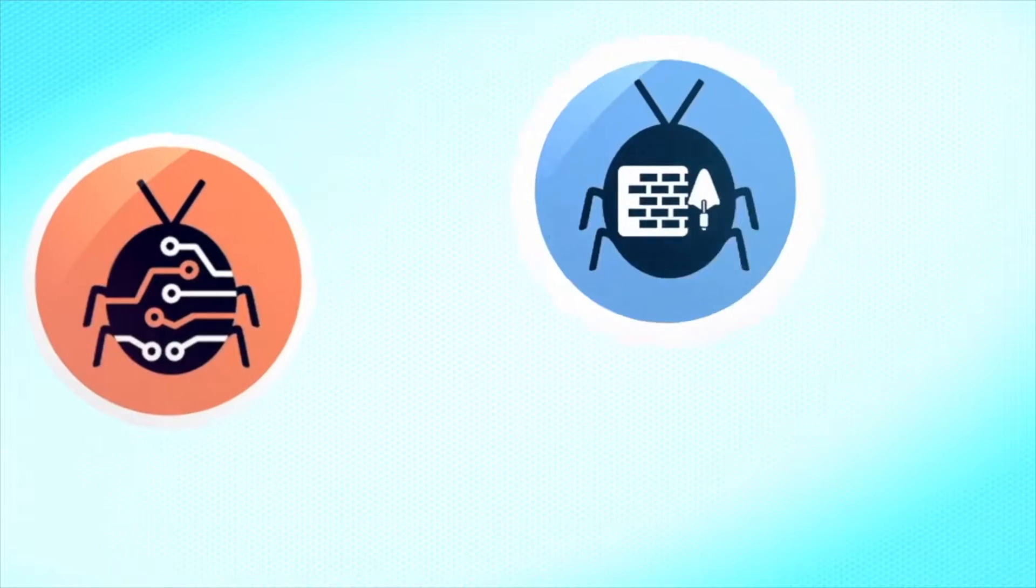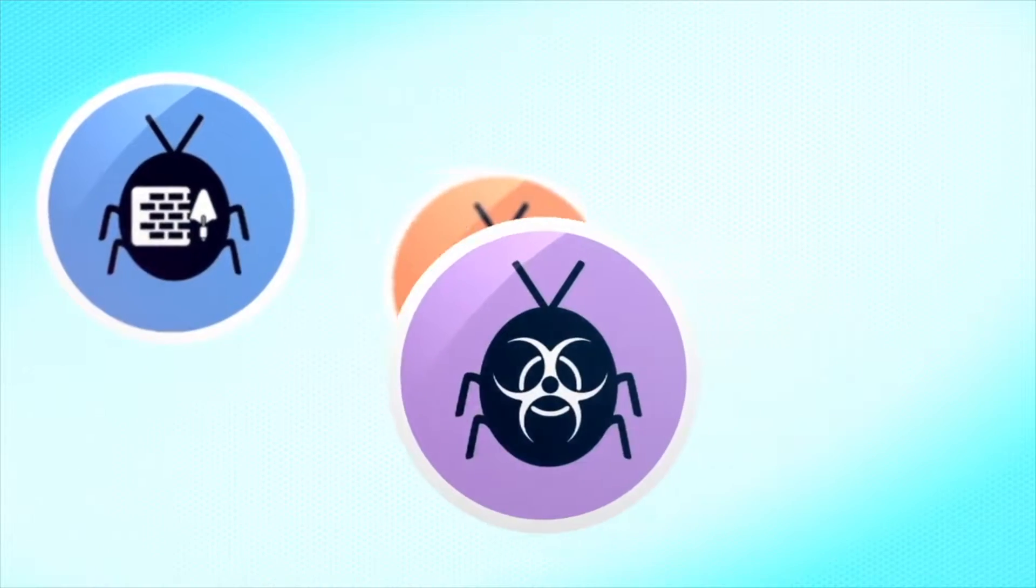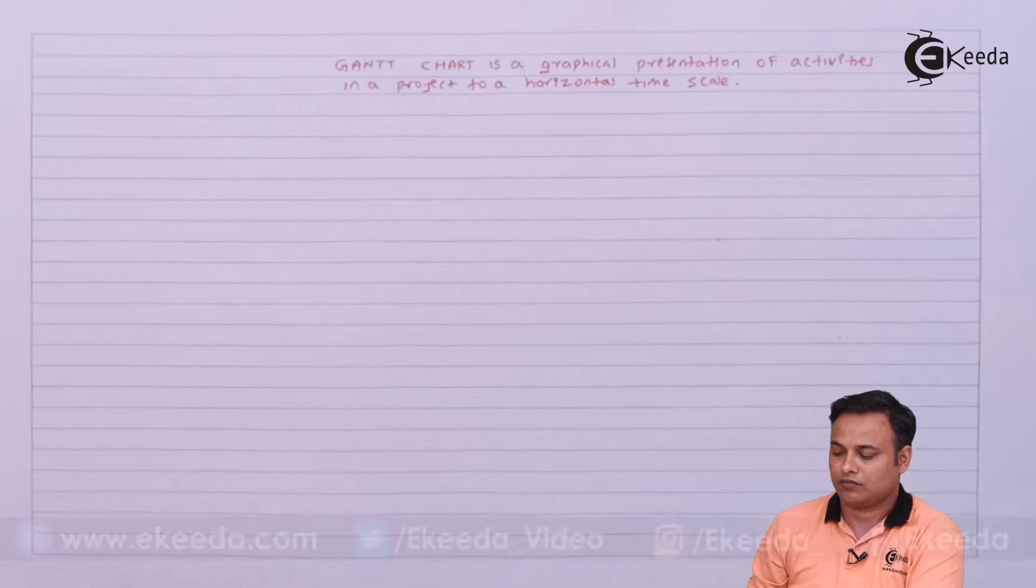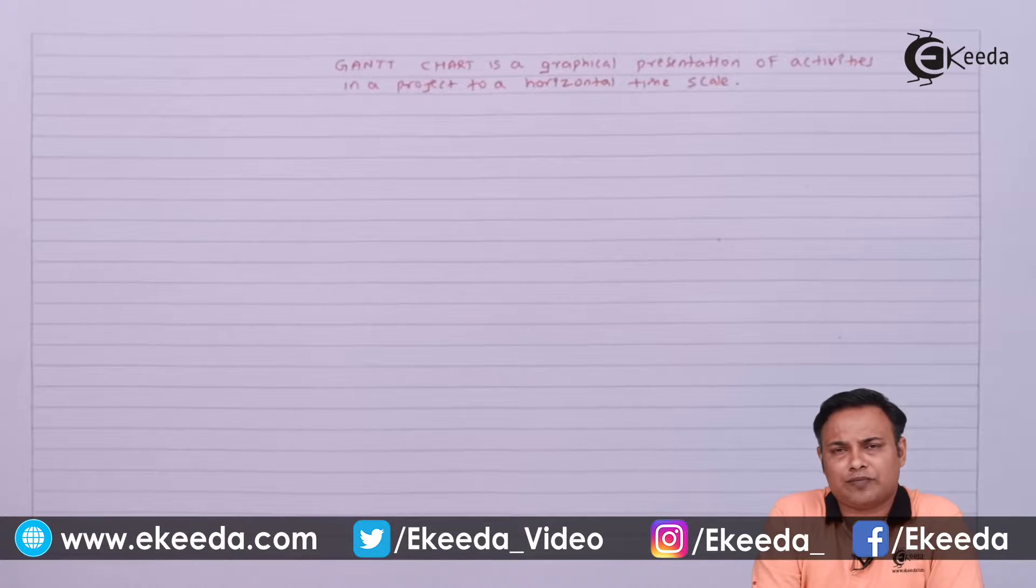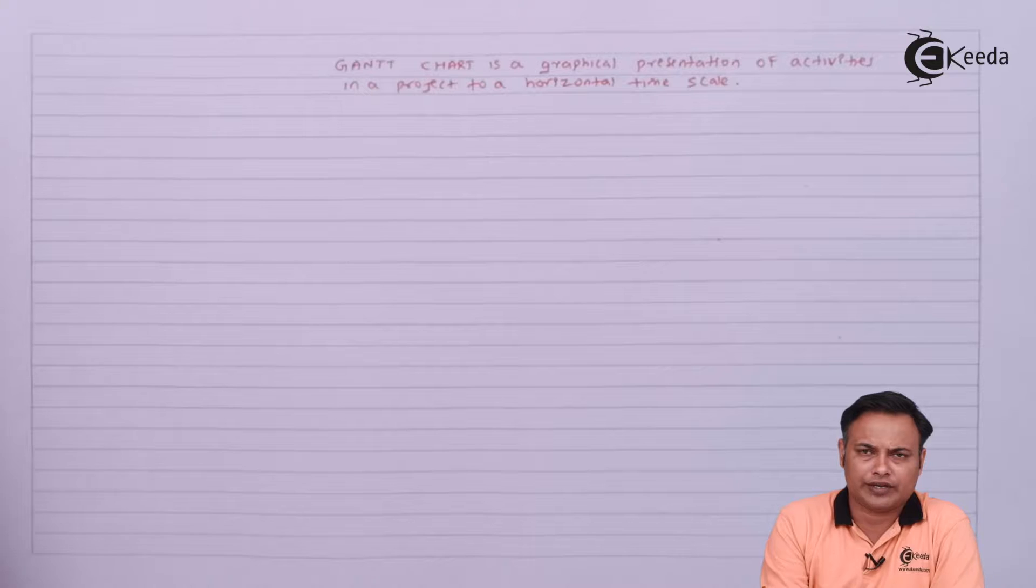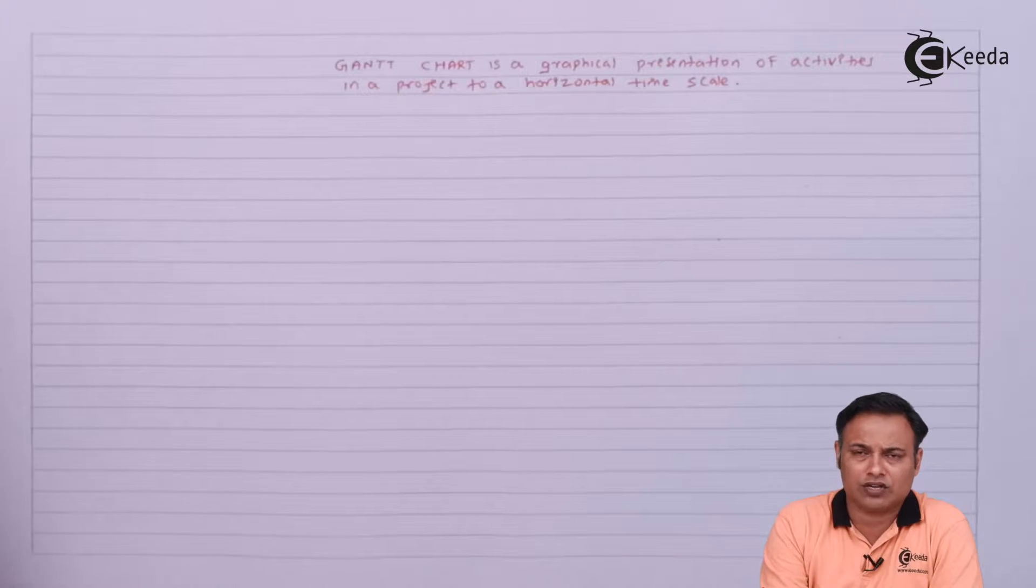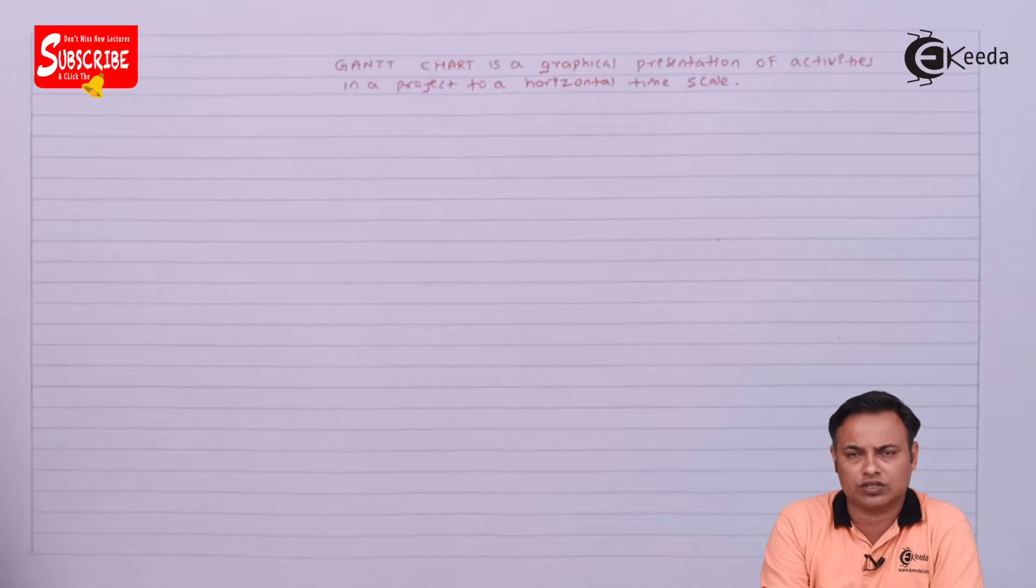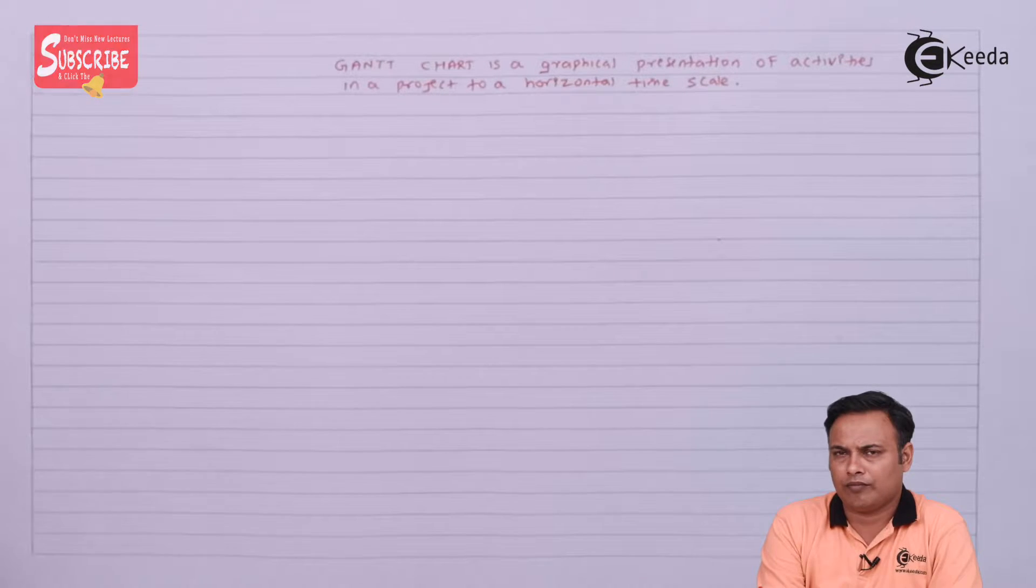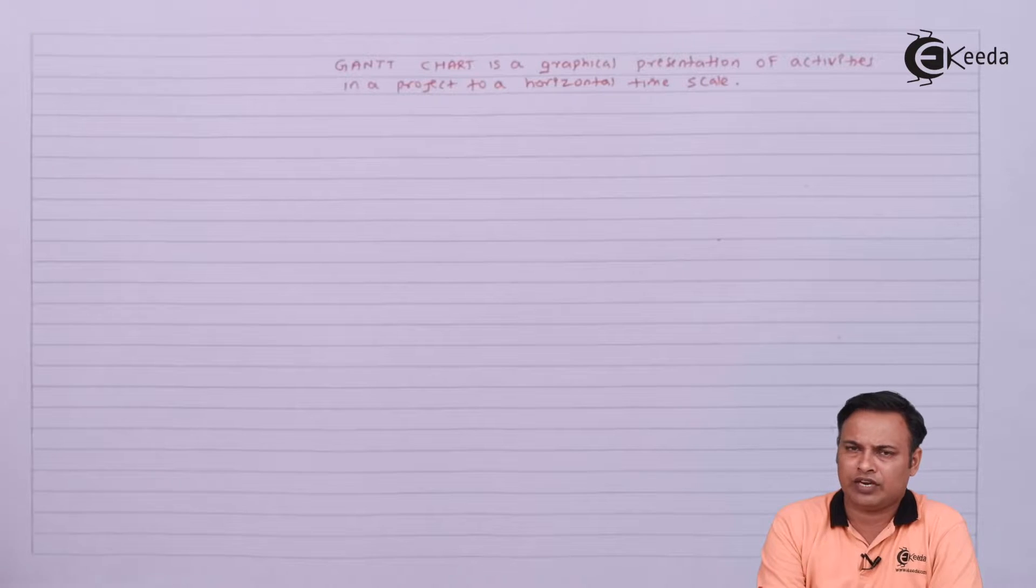Gantt chart can be defined as a graphical presentation of different activities in a project in a particular series or sequence, and they are drawn to the time scale. This is the main difference between a network diagram and a Gantt chart.